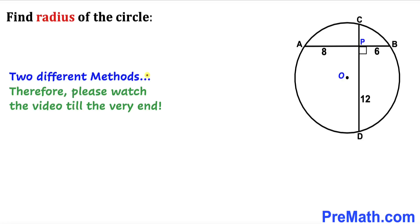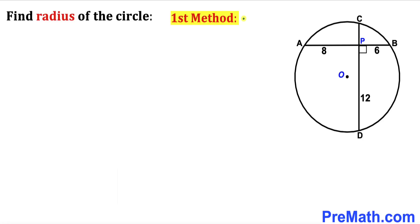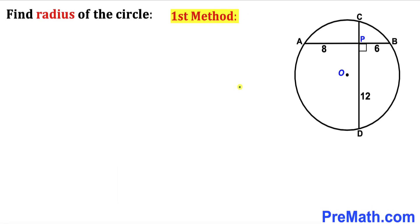Let's get started with the solution. In this video I'm going to show you two different approaches, so please watch the video till the very end. Here's our very first method. We can observe that these two intersecting chords AB and CD give us line segments 8, 6, and 12, but line segment CP is unknown.